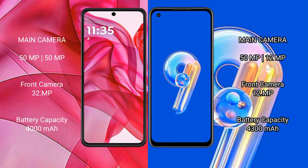Motorola Razr 50 Ultra features a dual rear camera setup with a 50MP main camera and 50MP ultrawide, and a 32MP front camera. Asus Zenfone 9 features a dual rear camera setup with a 50MP main camera and 12MP ultrawide, and a 12MP front camera.